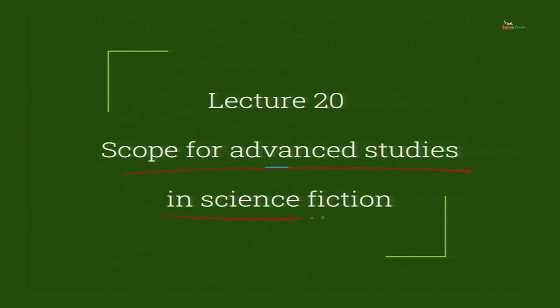Before we move on to scope for advanced studies in science fiction, let us understand what is science fiction and its difference with science in fiction. Science fiction is a story, a narrative, a plot line where characters are interacting with each other and at the background there is some kind of technology, some kind of futuristic aspect taking place — such as portal guns, wormholes, time travel — all of these things are part of theoretical physics.